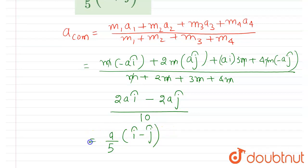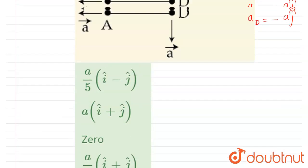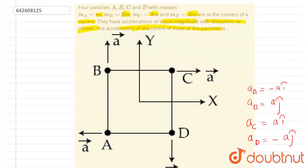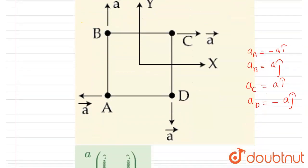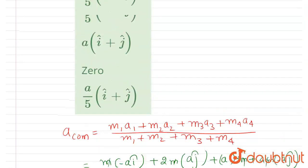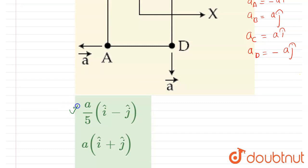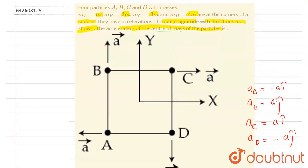So let's divide it. You'll get (a/5)(î - ĵ). So this will be the acceleration of the center of mass which we wanted to calculate. We got a/5(î - ĵ), so option A is the correct one. Thank you.